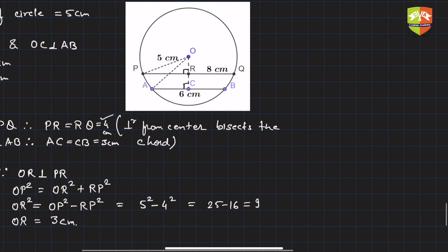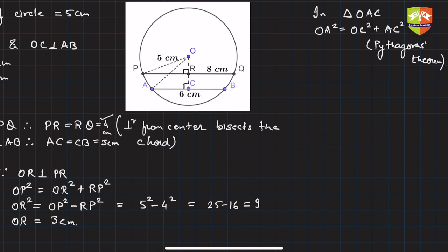Next, in triangle OAC, OA² is equal to OC² plus AC². Why? Pythagoras theorem. In the right angle triangle, hypotenuse square is sum of squares of the other two sides.